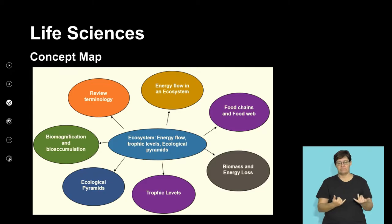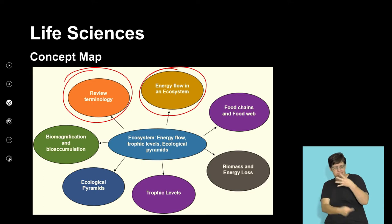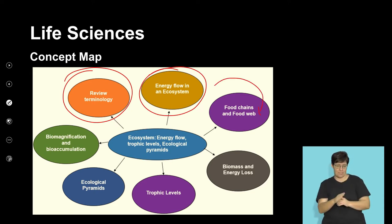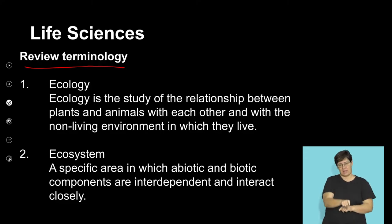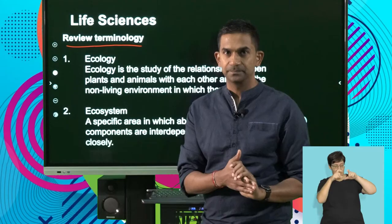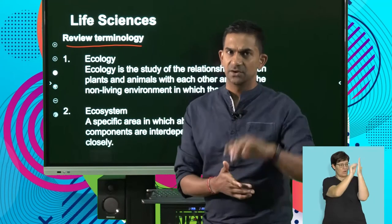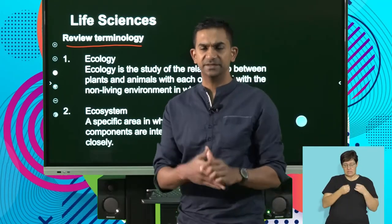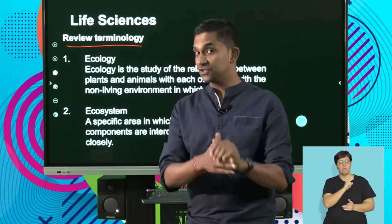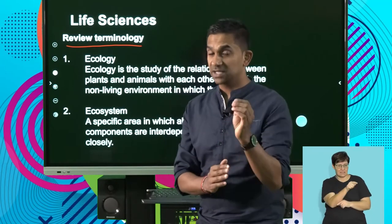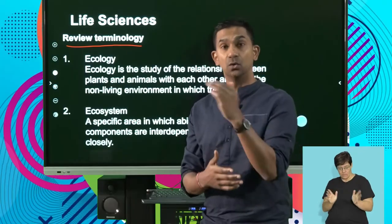We're going to review terminology, spend some time looking at how energy flows in an ecosystem, and wrap this segment up with looking at food chains and food webs. It's important that you have the terminology and review it at the start of every chapter. Make a list of these terms and write them down on a separate sheet of paper at the start of every section — it's good to use as a reference and helps consolidate your understanding.